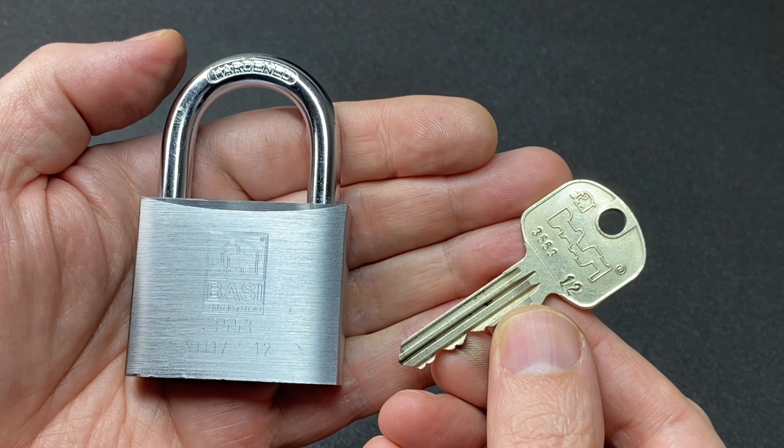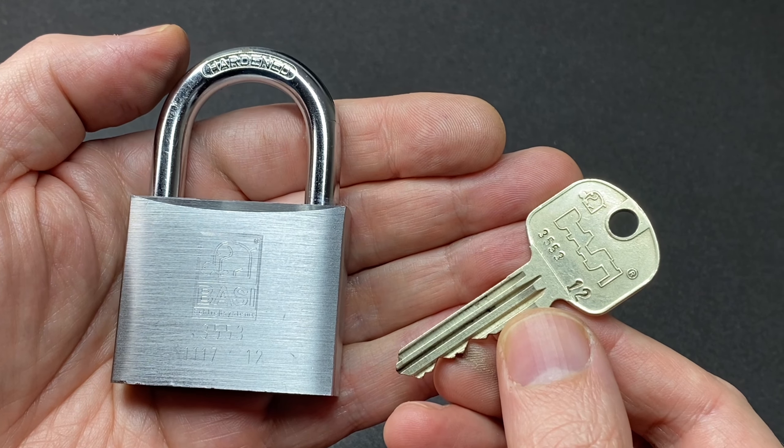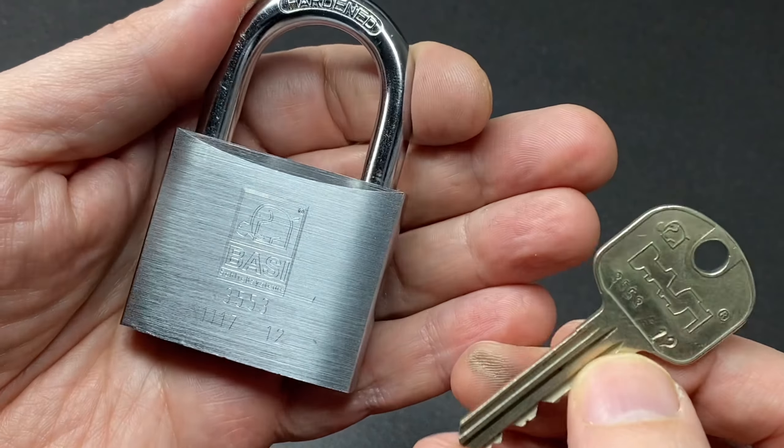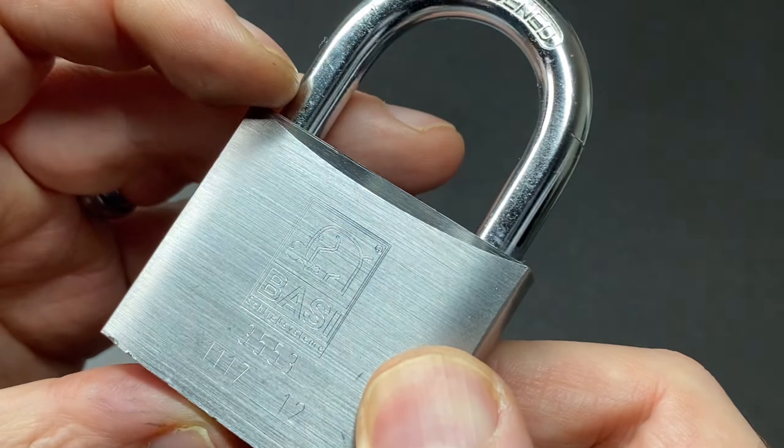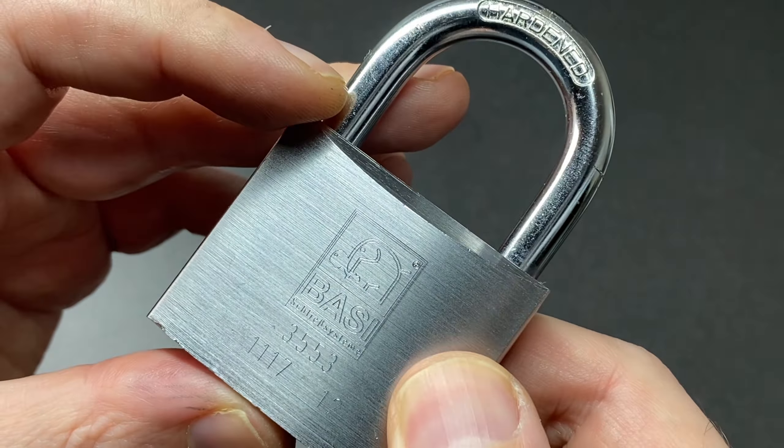Hello again, it's Lock Noob, and here we have a very nice BASI AX padlock. A few features on this which I really like - one, I don't see many BASI padlocks over here in the UK. You can just about make out the BASI logo etched on here, which is one of my all-time favorites. Can you see that? It's an elephant holding a key in its trunk. Absolutely love that.